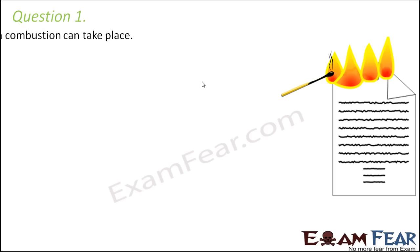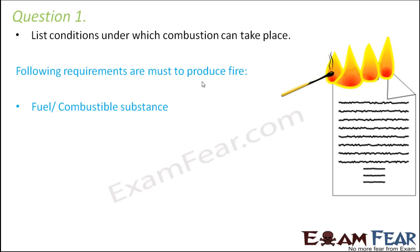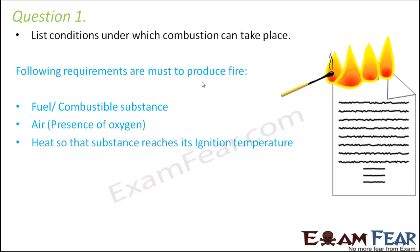Question number one: list conditions under which combustion can take place. As I have mentioned before, there are three things which are absolutely necessary for combustion. First is a fuel or a substance — you need something to burn, otherwise there will be no combustion. Second is air, because combustion happens in the presence of oxygen. Combustion is the reaction of a substance with oxygen to release a lot of heat.